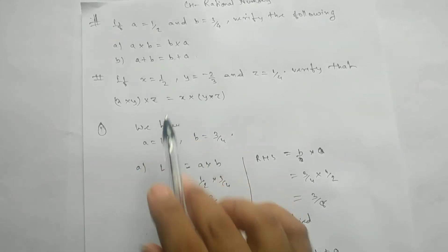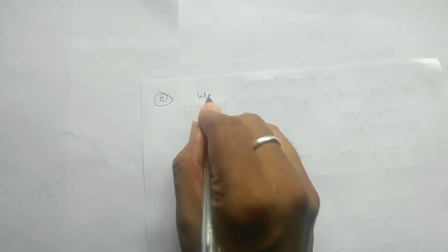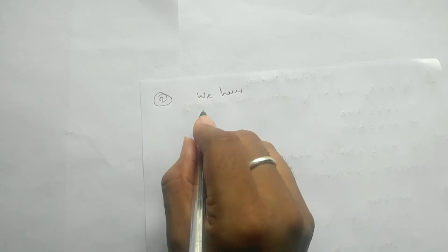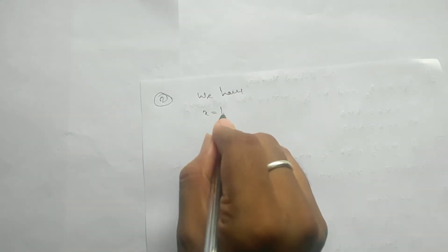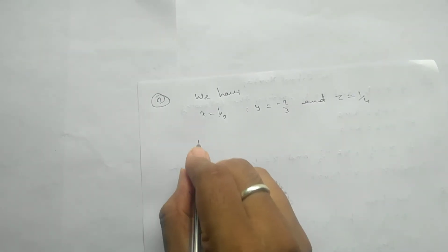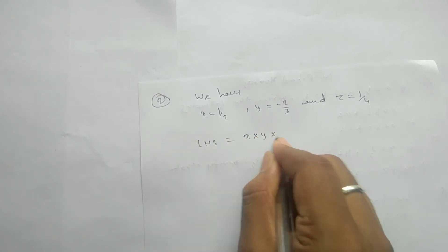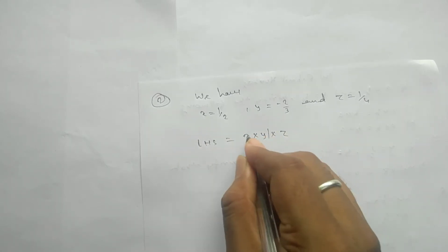Now for the second question, we verify the associative property under multiplication for rational numbers. Here x equals one by two, y equals minus two by three, and z equals one by four.